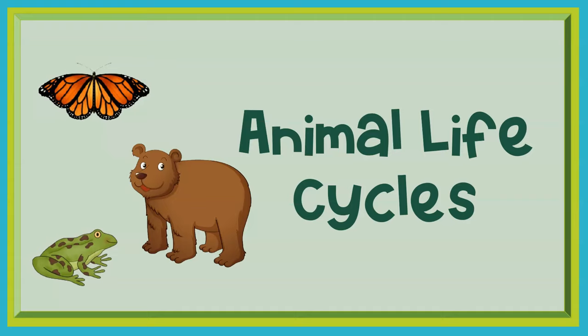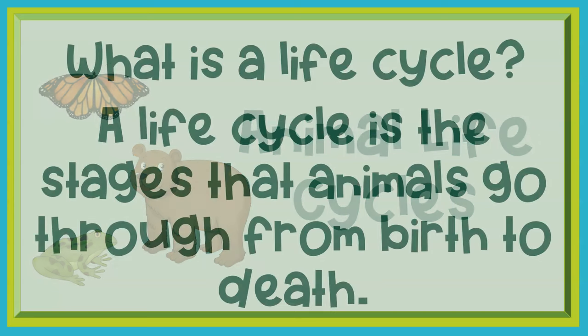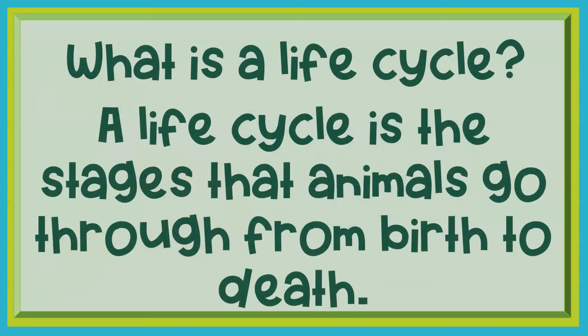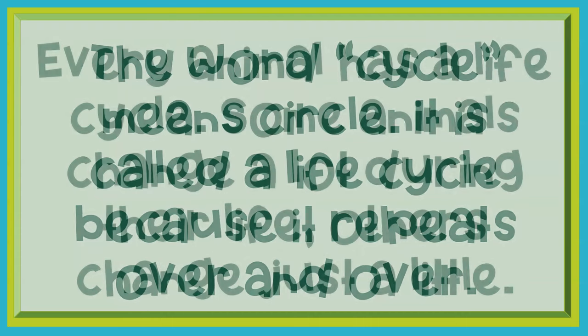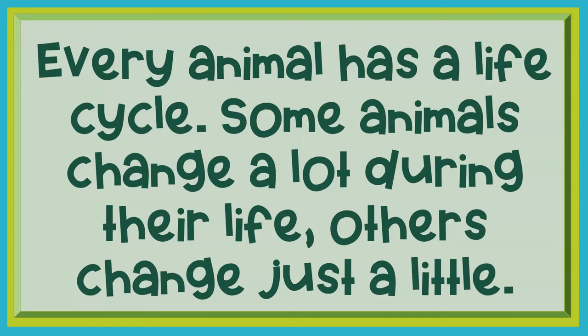Animal Life Cycles. What is a life cycle? A life cycle is the stages that animals go through from birth to death. The word cycle means circle. It is called a life cycle because it repeats over and over. Every animal has a life cycle. Some animals change a lot during their life, while others change just a little.